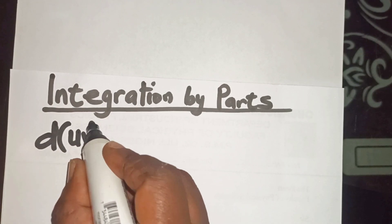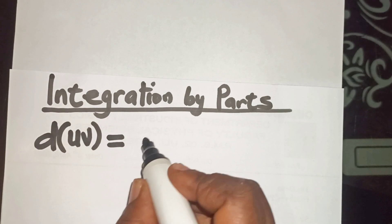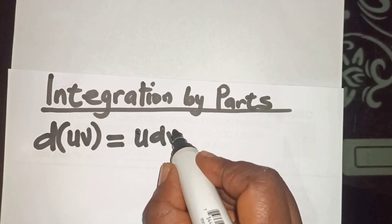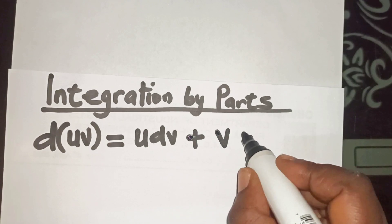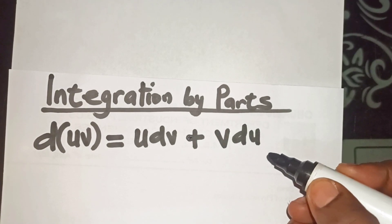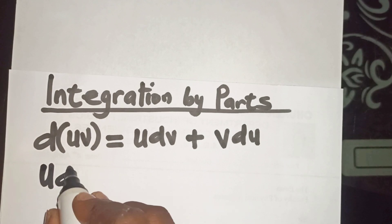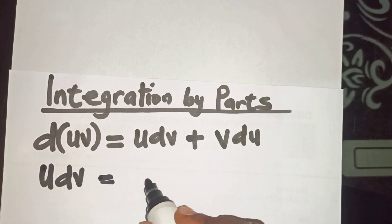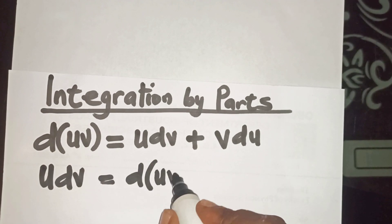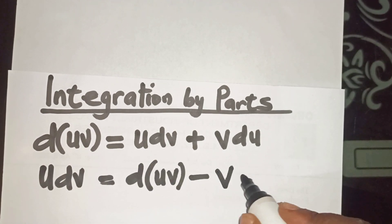The method of integration by parts depends on the formula for the differential of a product. That is, d(uv) is equal to u·dv plus v·du. If we make u·dv the subject, then we will have u·dv is equal to d(uv) minus v·du.